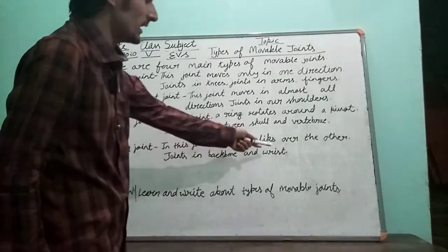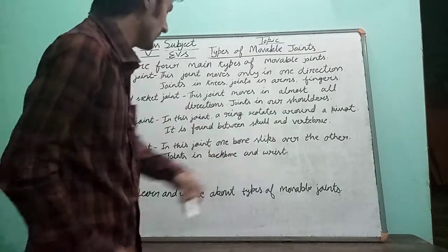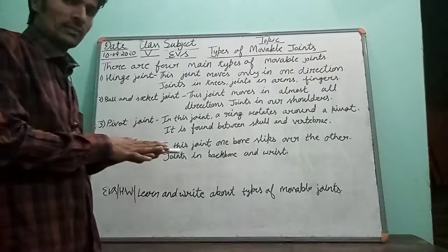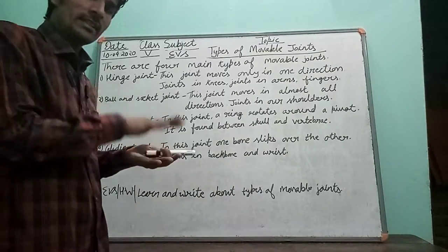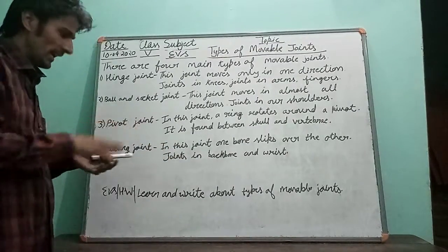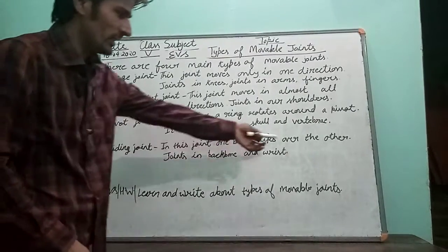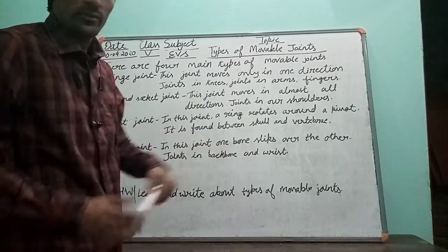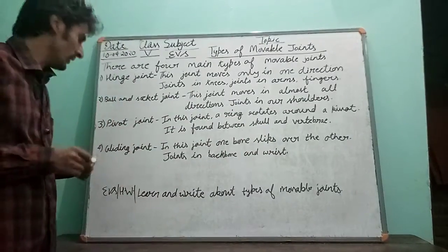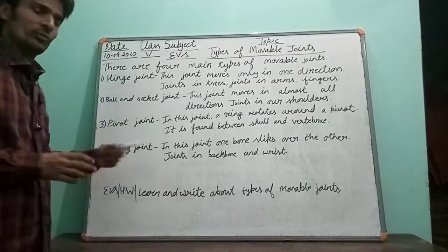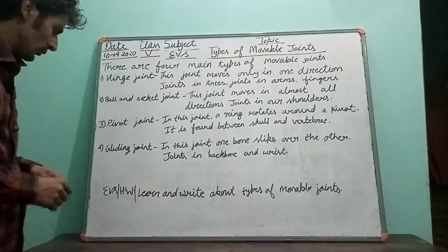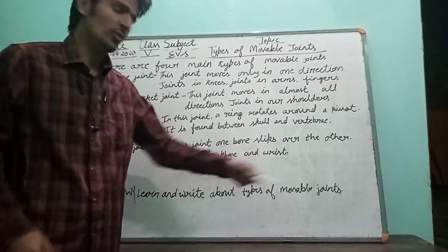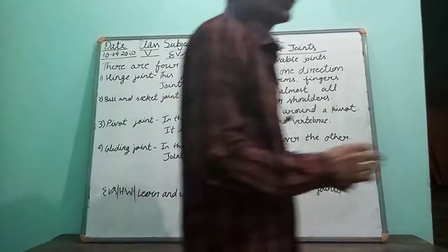Next is the gliding joint. In this joint, one bone slips over the other — one bone is below and the upper one slides over it. Gliding joints are found in the backbone and wrist. Your work is to learn and write about all types of movement joints. Thank you.